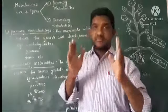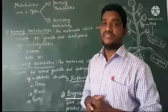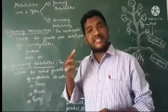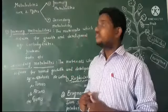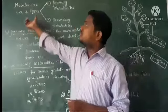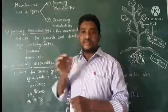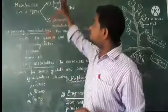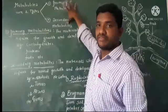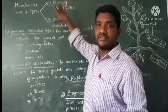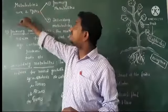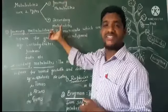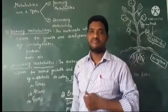Hi children. The next small concept is biochemical substances. Biochemical substances are also called metabolites, and they are of two types: primary metabolites and secondary metabolites.